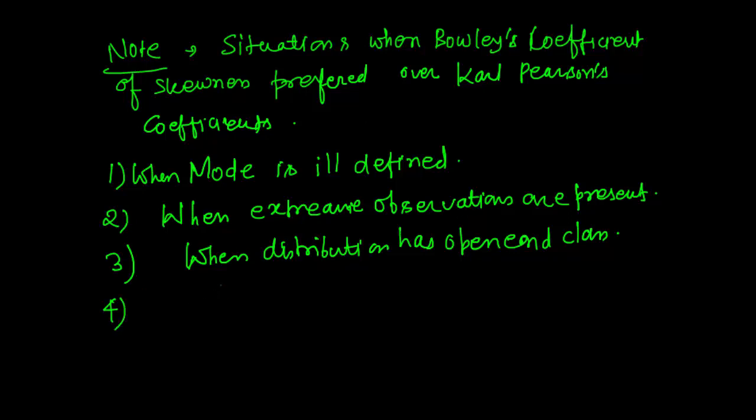And the last one is when distribution has unequal class intervals. In these four cases we can use Bowley's coefficient of skewness over Carl Pearson's.